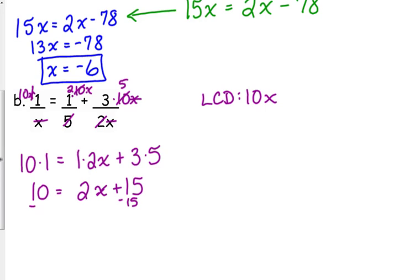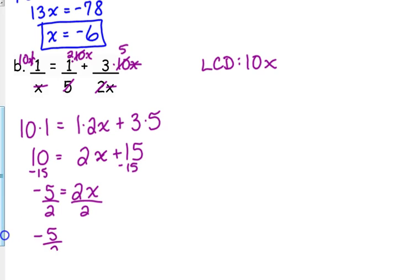Subtract 15 from both sides. We get negative 5 equals 2x. Divide by 2. The answer is negative 5 halves. I prefer that you leave your answers in fractional form.